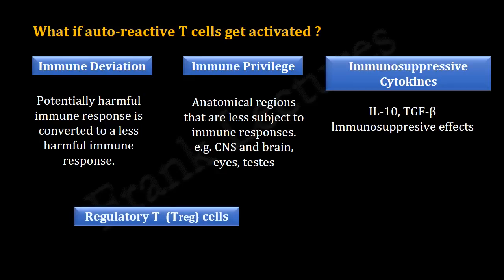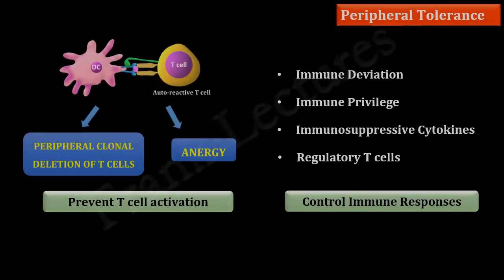Regulatory T cells have the ability to control the responses of activated T cells regardless of antigenic specificity. They block the proliferation of T cells and secrete immunosuppressive cytokines. We now understand that peripheral tolerance is responsible for tolerance in peripheral circulation. In the next video lecture, we will study B cell tolerance.